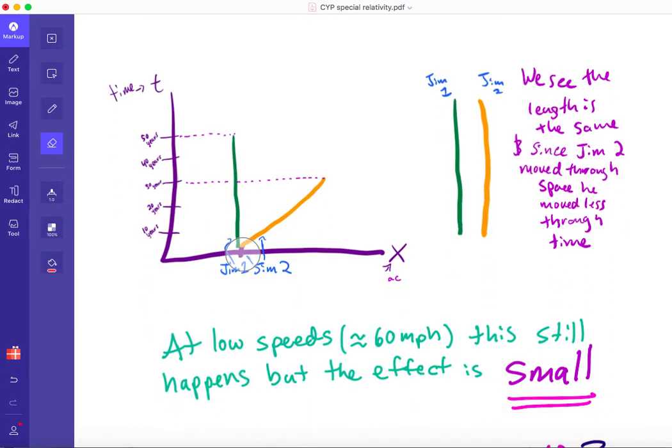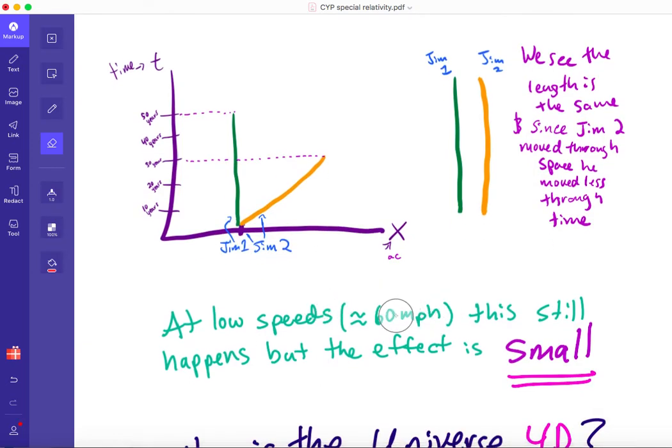And this happens even at low speed. So even when we're going in a car, time is ticking slower for you moving in this car going 60 miles per hour than it would have been sitting on your couch at home. But the effect is just so small. Don't try to become younger by driving a long time. You have to go very fast, like millions of miles per hour to notice this effect.